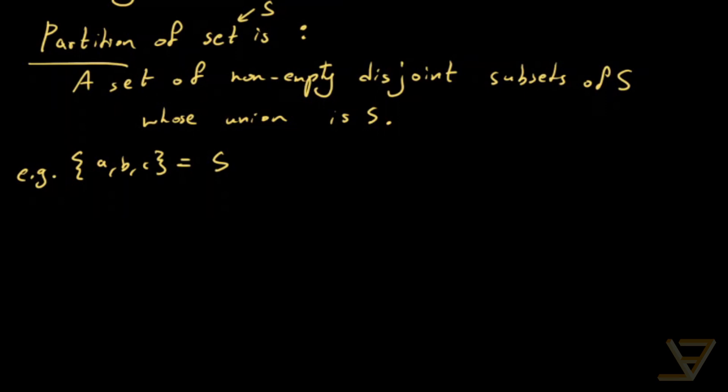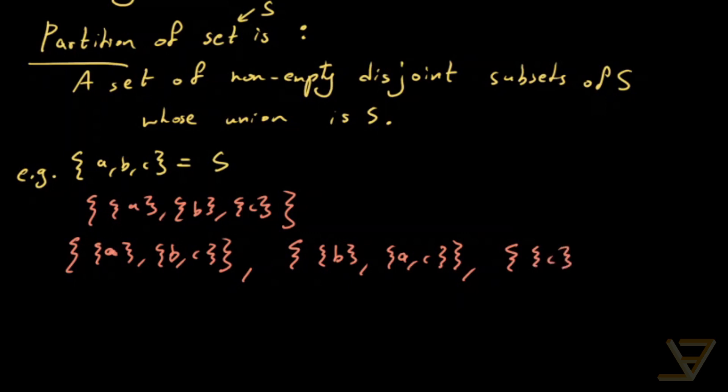So one partition is the partition of singletons A, B, and C. Notice that the sets are disjoint and they're non-empty in the partition. Another possibility is A, the singleton, along with the two-set BC. And so you can probably tell that we're going to have a couple more of these.